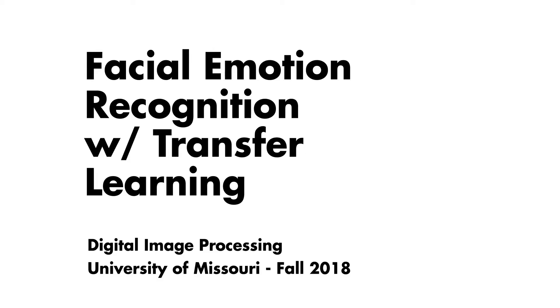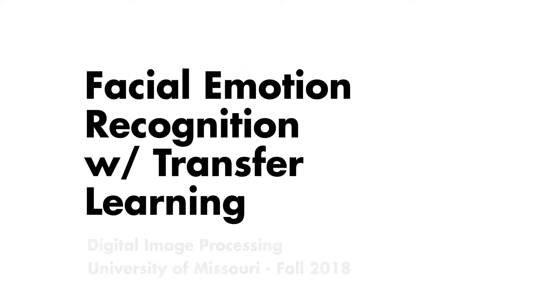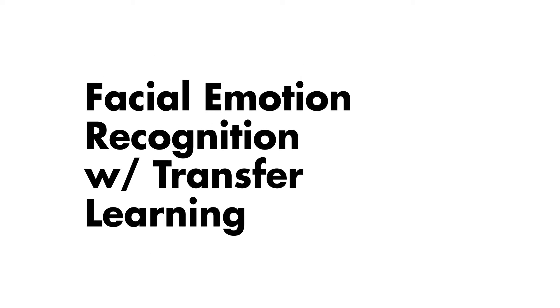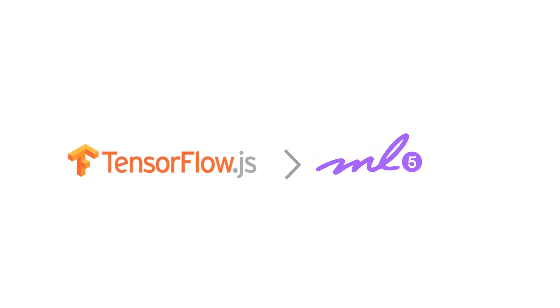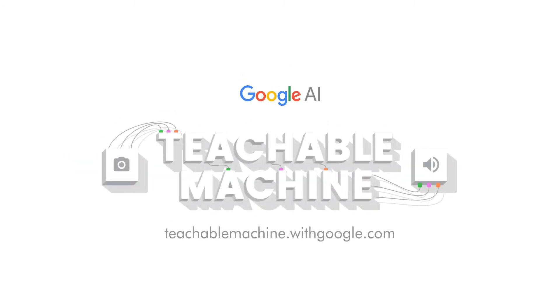How's it going everyone, today I'll be presenting our final project for digital image processing class. We have implemented an emotion recognition web application built on top of the machine learning functionalities provided by a JavaScript library called mf5, which in turn is based on a well-known machine learning library called TensorFlow.js. This project was inspired by a Google AI experiment called Teachable Machine, and you can learn more about that at teachablemachinewithgoogle.com.